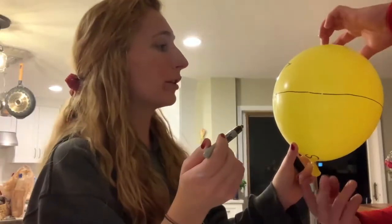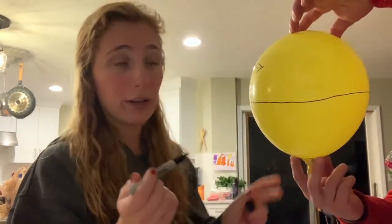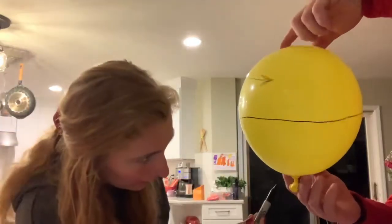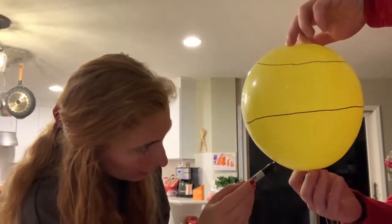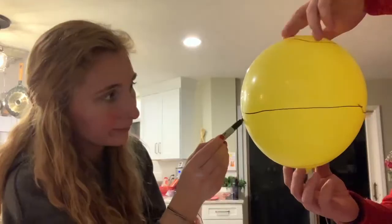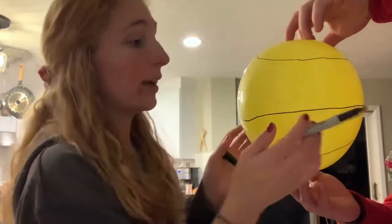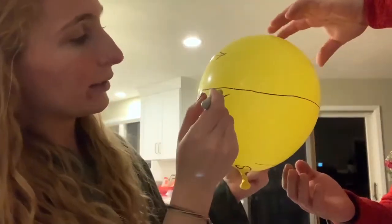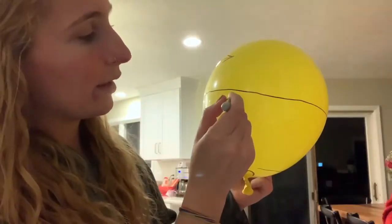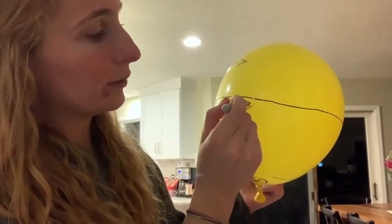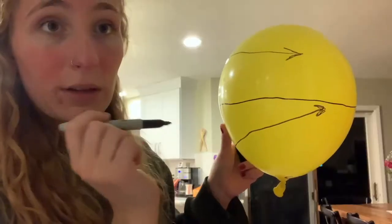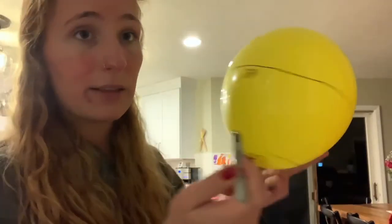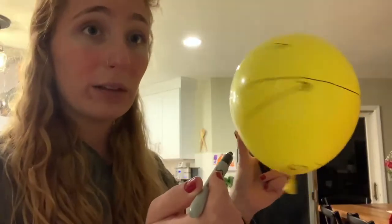Then have your partner continue twisting it the same way, and you're going to start at the South Pole and try to draw a straight line — and it's going to end up curving again. You're going to draw an arrow. They're both coming towards the equator from opposite ends, because the earth is always rotating.